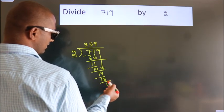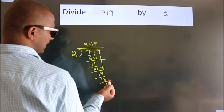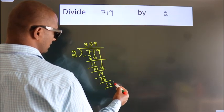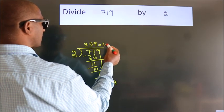After this, there are no more numbers to bring down. So we stop here. This is our remainder. This is our quotient.